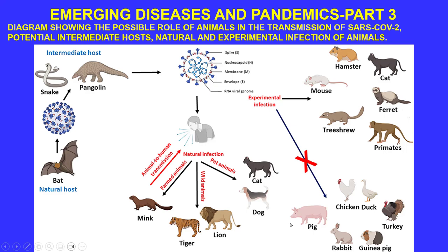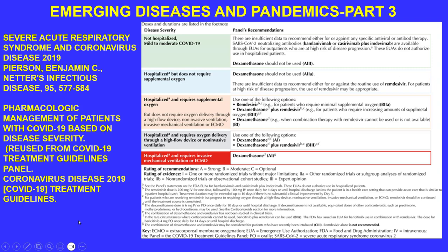In experimental infections, rodent, feline, primate, and ferret species were susceptible. Interestingly, no infection was found in rabbits, chickens, dogs, ducks, or pigs. Natural infections did occur in cats, dogs, lions, tigers, and minks — there were news reports of tigers in zoos dying from COVID. The key point is the animal-to-human transmission — there is no real species barrier preventing the virus from jumping.